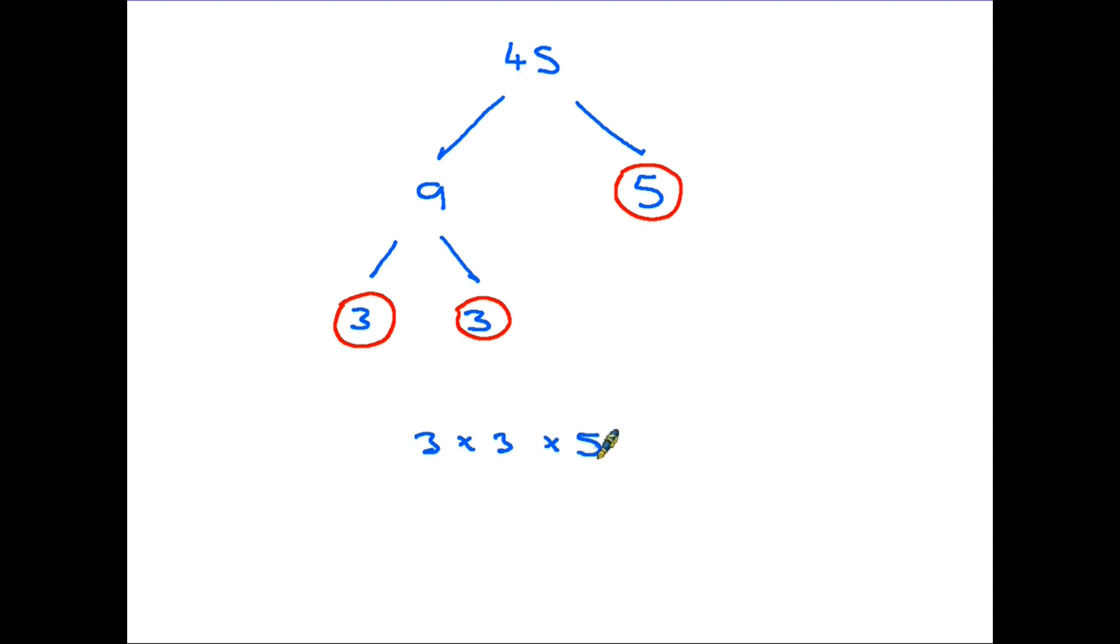That's correct. That is expressing it as a product of its prime numbers. 3 times 3 is 9, 9 times 5 is 45. But in this case because there are two 3s we go a step further. 3 times 3 can be written as 3 squared times 5. Therefore the complete answer is 3 squared times 5.